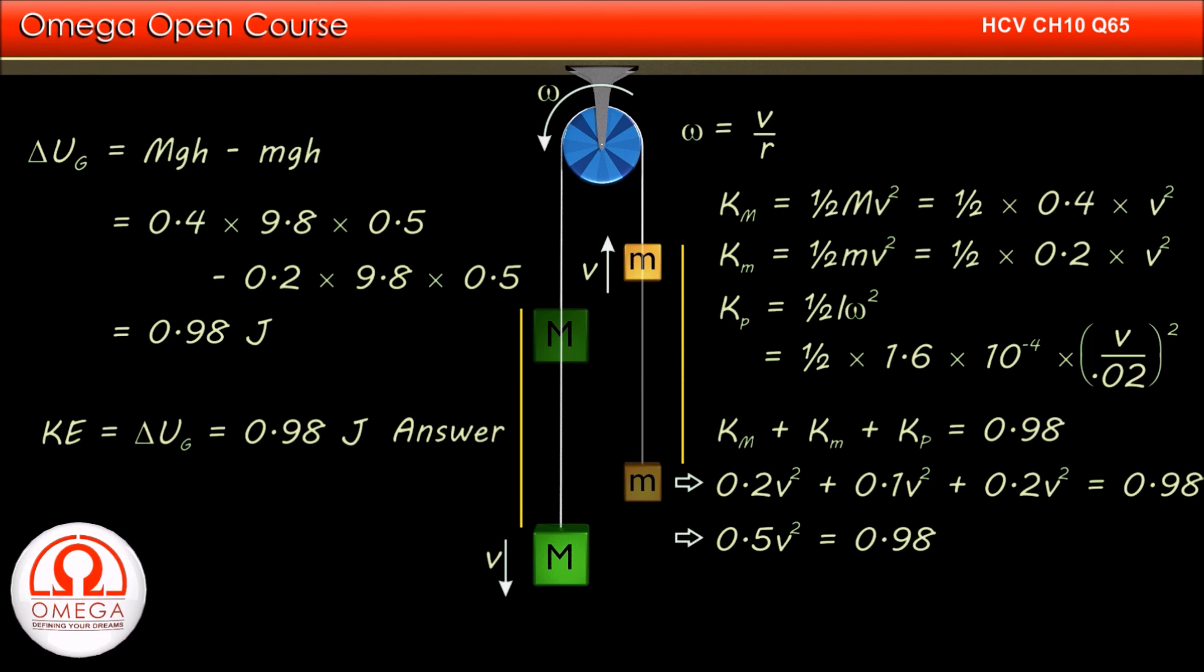Simplifying, we get 0.5V² is equal to 0.98, or V² is equal to 1.96. This implies V is equal to 1.4 meter per second. This is the answer to the second part of the question.